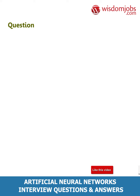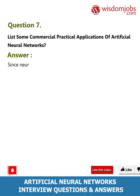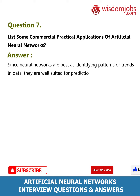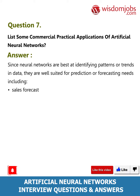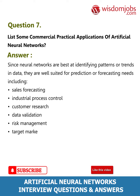Question 7: List some commercial and practical applications of artificial neural networks. Since neural networks are best at identifying patterns or trends in data, they are well suited for prediction and forecasting needs, including sales forecasting, industrial process control, customer research, data validation, risk management, and target marketing.